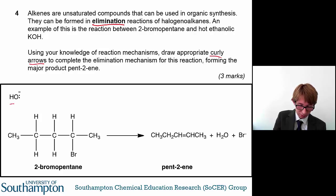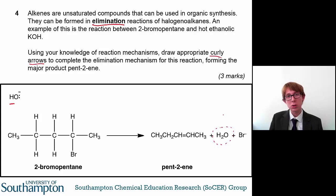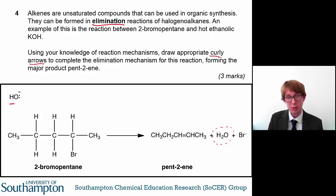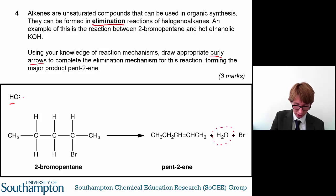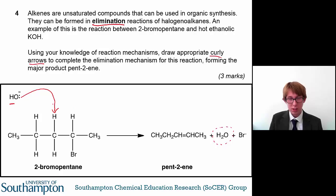You have an OH⁻ here, and in the products you've formed a water molecule. So what's likely going to happen is that you're going to accept a proton — the hydroxide is going to act as a base, accepting a proton from the 2-bromopentane. The first curly arrow goes from this lone pair, moving the electrons down to here, and this hydrogen atom is gained by the hydroxide. That accounts for the formation of water.